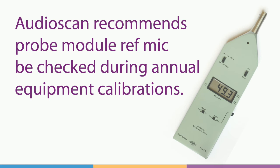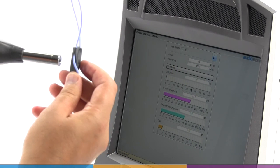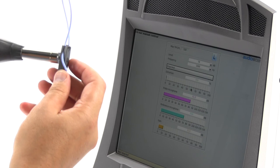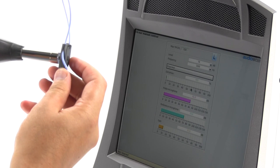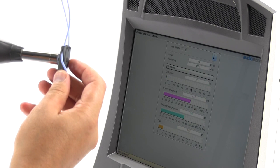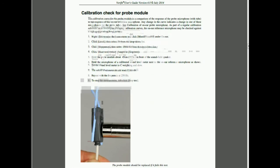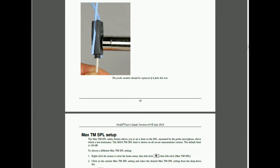While the user calibration may be performed weekly, AudioScan recommends an annual calibration check of the probe module reference microphone level. It is often convenient to have this done when other equipment is being calibrated. The technician will check the reference microphone against a calibrated sound level meter to ensure it has not drifted from factory calibration. Further details on this annual procedure are available in the user guide or the system help menu.